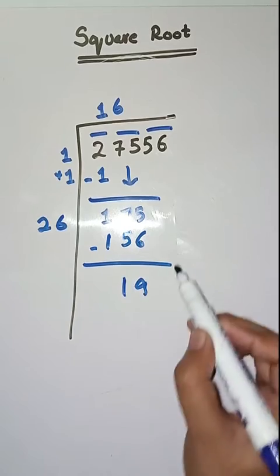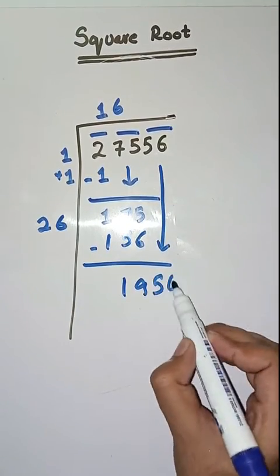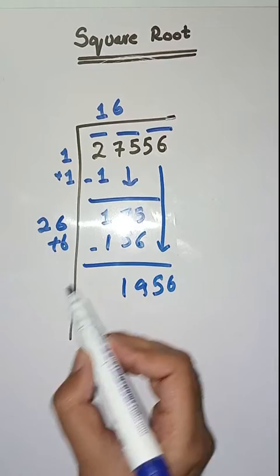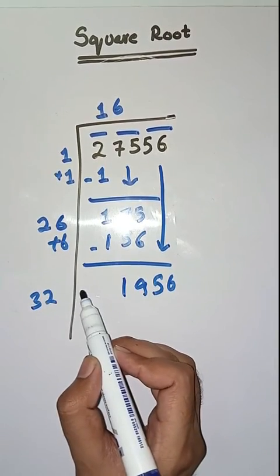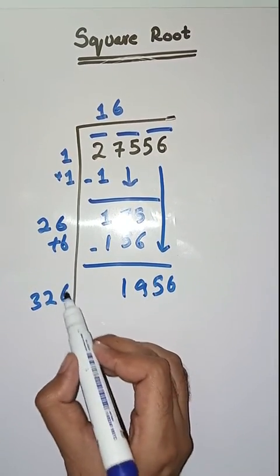26 plus 6 which is equal to 32. Now we will take a number 6. So 326 times 6 is 1956. This is completely solved. The square root of 27556 is 166.